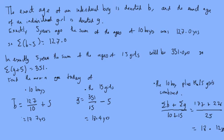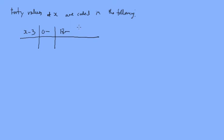Let's look at an example with group data. 40 values of x are coded in the following way: x minus 3. From 0 to 18, then 18 up to 24, and 24 to 32. And we have the frequencies 9, 13, and 18.